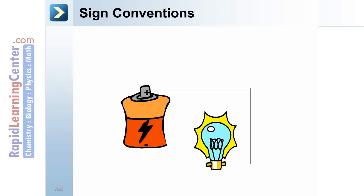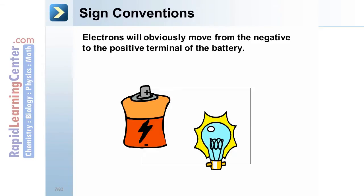Sign conventions. Again, in our same example circuit. Electrons will obviously move from the negative to the positive terminal of the battery. Electrons would be repelled by the negative and attracted to the positive.